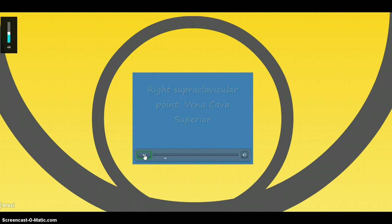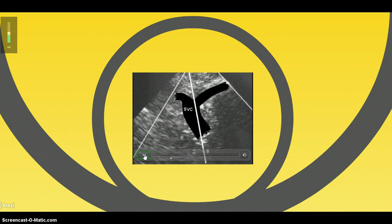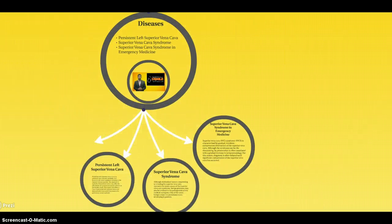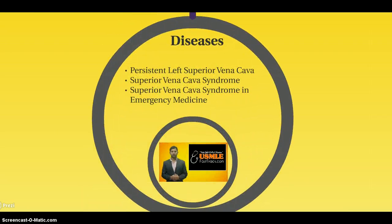The right superior point of the vena cava. This is the zone. Persistent left superior vena cava. Superior vena cava syndrome — emergency medicine.